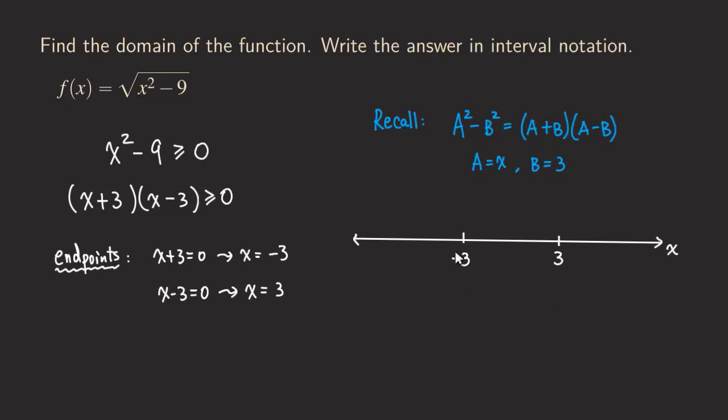Remember, the smaller numbers should be on the left side of the larger number. So now we have those two endpoints separating the whole number line into three intervals. All the values less than negative 3, values between negative 3 and 3, and then values greater than 3.